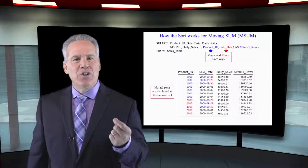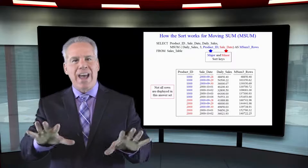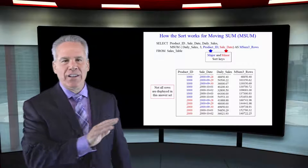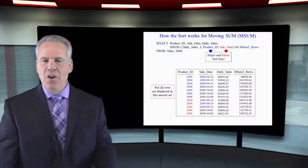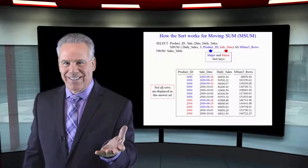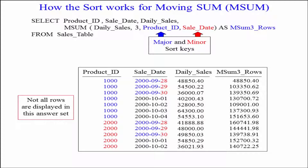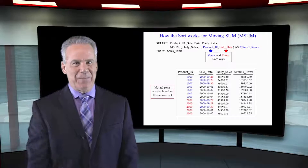Something about SQL is that people assume it's all done in one pass. Ordered analytics are never done in one pass. We sort the data first, and then we calculate. As you can see here, we sort by product ID and then sale date, and then we're ready to calculate the moving sum.